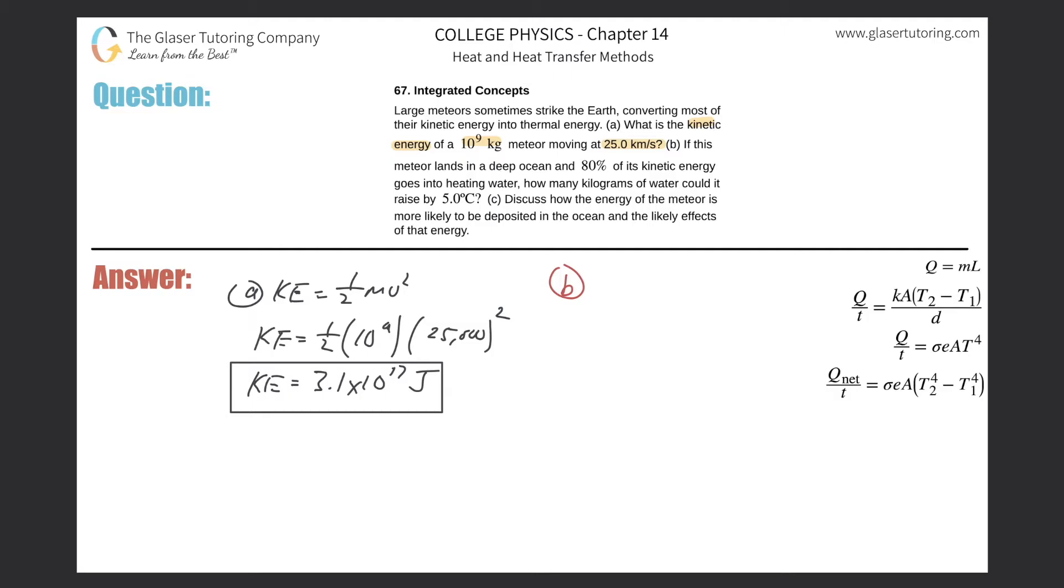Letter B now: if this meteor lands in a deep ocean and 80% of its kinetic energy goes into heating water, how many kilograms of water could it raise by 5 degrees Celsius? So basically we need that Q equals MC delta T formula, right? They're asking us to solve for mass.